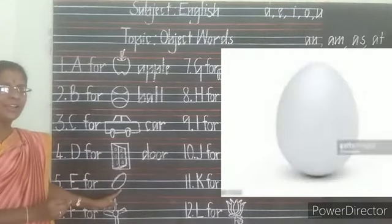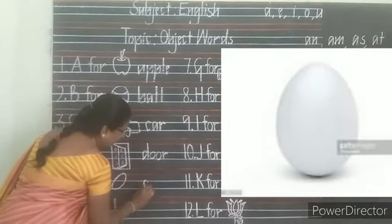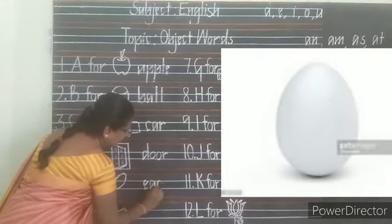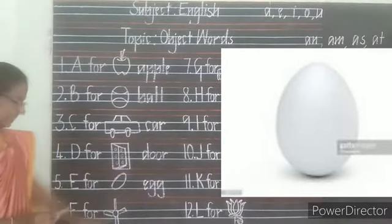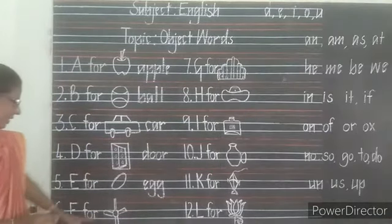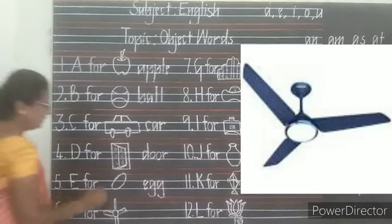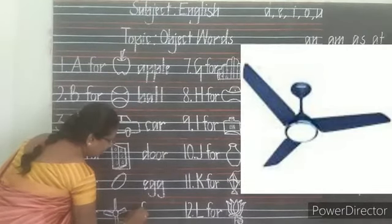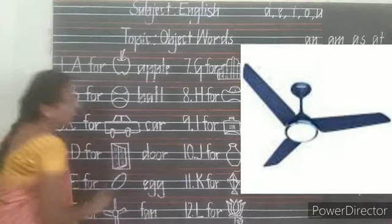Next, E — Egg. E-G-G, Egg. E-G-G, Egg. Next, F — Fan. F-A-N, Fan. F-A-N, Fan.